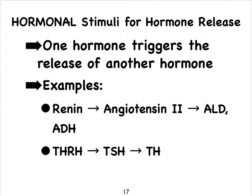By now, you've also seen examples of how one hormone can trigger the release of another hormone. Think of the renin-angiotensin mechanism where we start with renin and ultimately can end up with the release of aldosterone and ADH. And angiotensin 2, once it has been formed, can trigger the release of even more angiotensin 2 — so there we see an example of a positive feedback.